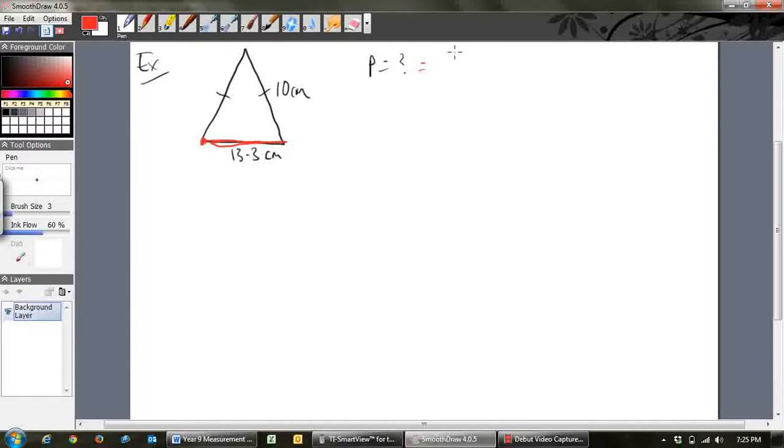So how long is this side here? Well that's 13.3. How long is this side here? Well that's 10. So we're just adding them all up. And lastly, how long is this side? Well this little dash thing here says that this side is the same length as that side. So that'll be 10 as well. Add them all up and you get 33.3 centimeters.